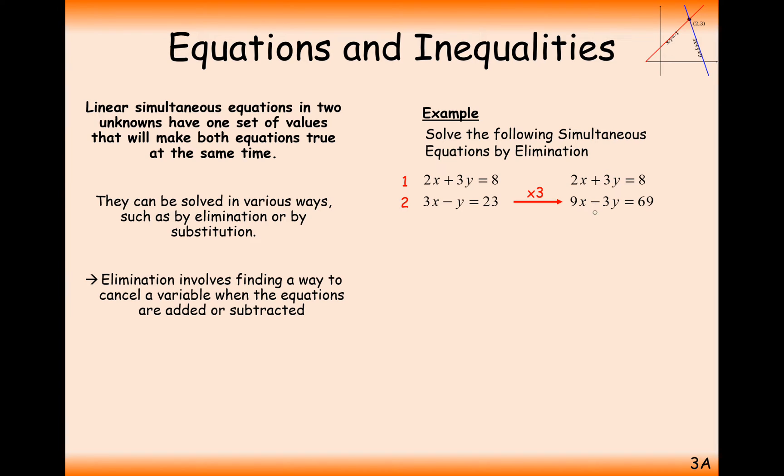Now you can see that I've got my 3y and minus 3y together there, they are the same value on the coefficient of y, and because they're a different sign, the way we're going to cancel them out is if we add the equations together. So we get 11x, 3y add minus 3y cancels out and makes 0, and 8 add 69 is 77, so we can clearly get that x is 7.